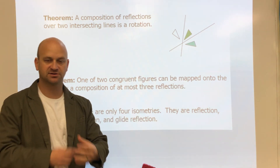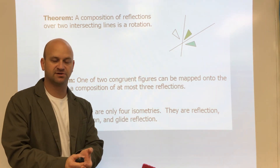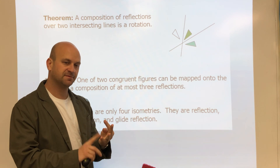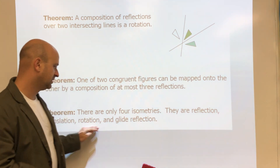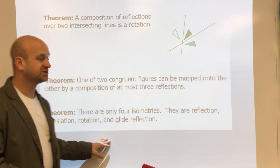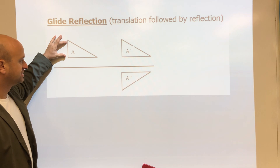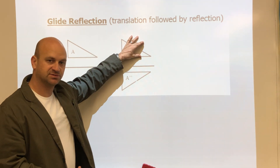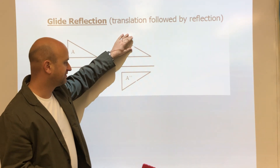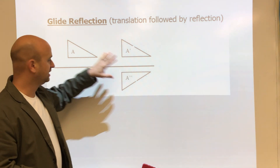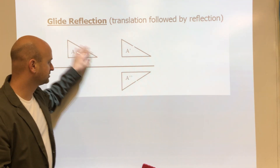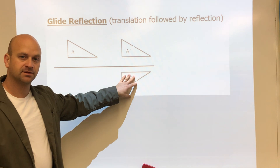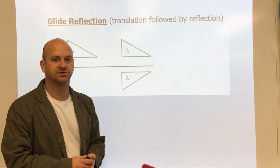There are only four isometries. We've talked about three so far: translations, reflections, and rotations. The fourth one is what we call a glide reflection — a translation to some given location followed by a reflection. When that occurs, the original shape and the image are congruent, so they're an isometry.